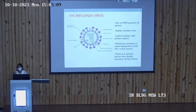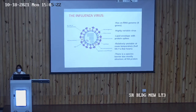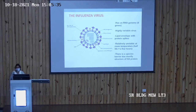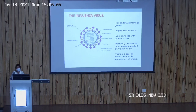Influenza virus is an RNA virus with a single-stranded genome, segmented into eight pieces. It has a lipid envelope with protein spikes and is relatively unstable at room temperature. There is a species barrier due mostly to the structure of the hemagglutinin protein. The hemagglutinin spike and neuraminidase enzyme are the two structures which determine the antigenic properties of the influenza virus.